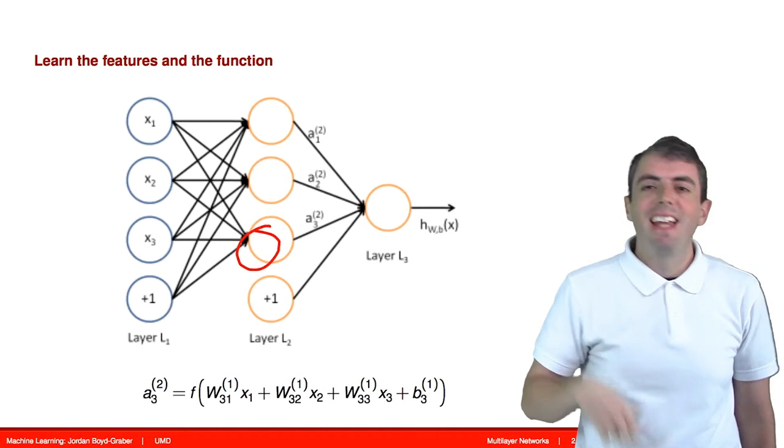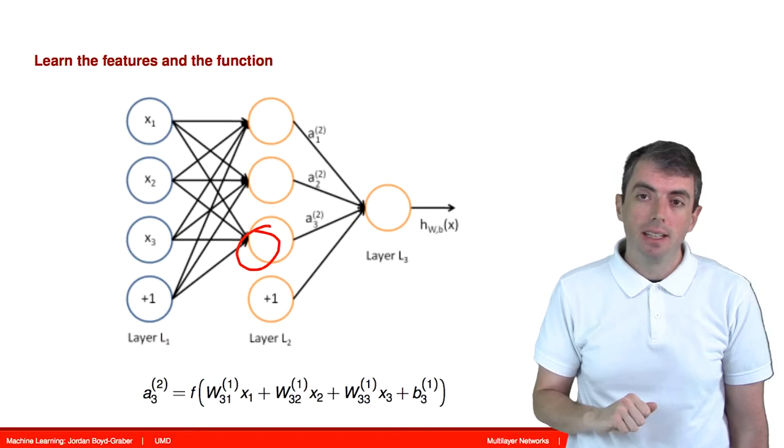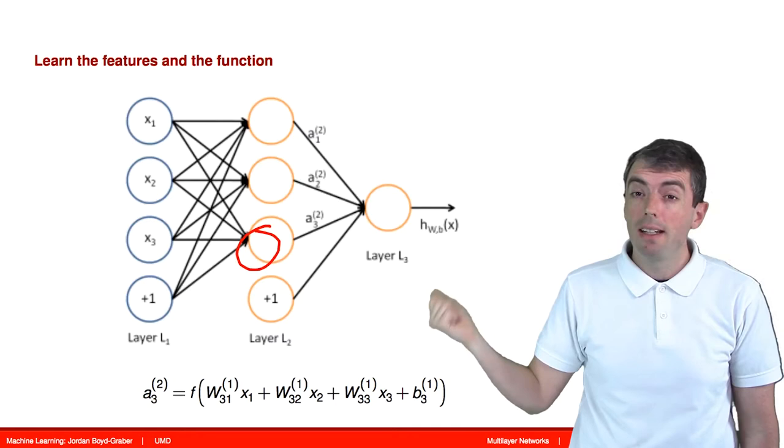You have exactly the same thing for the third hidden node in the first hidden layer. All of that gets multiplied by a feature vector specific to that hidden node, add in a bias specific to that hidden node, and you pass that through an activation function.